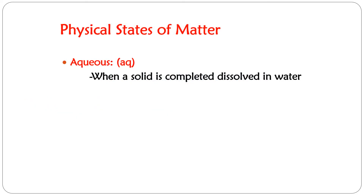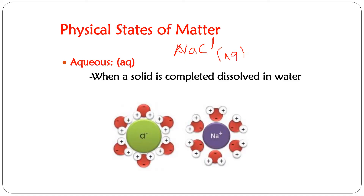There is one more state of matter you may encounter — the aqueous state. For example, NaCl(aq) represents sodium chloride, your table salt, dissolved in water. The symbol 'aq' tells you that the solid has been dissolved in water, forming an aqueous solution. That covers how we classify matter based on its composition and physical state. See you next time.